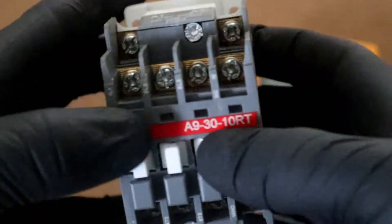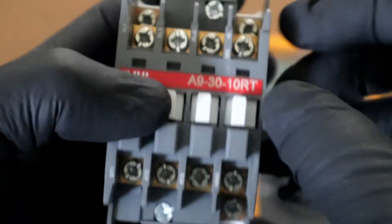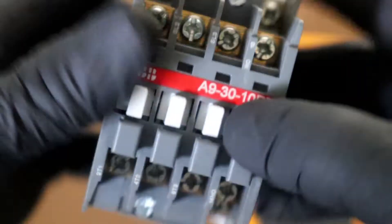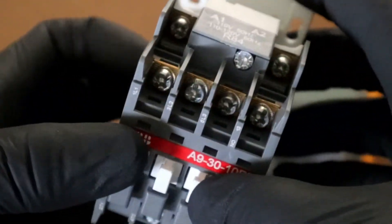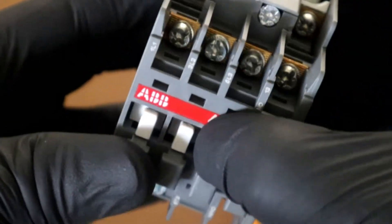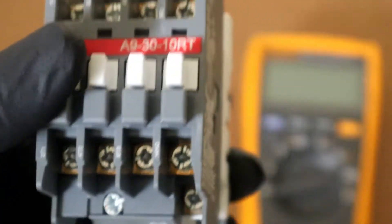Inside here we have a spring called a return spring. That is also a significant failure point of contactors. If our spring fails that will prevent our coil from actually closing and opening our contactor, preventing it from operating as it's supposed to operate.